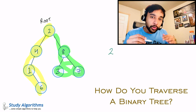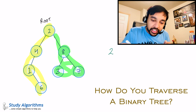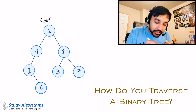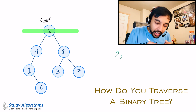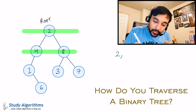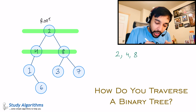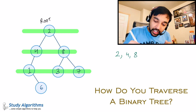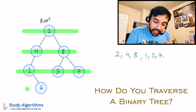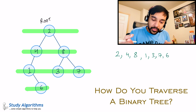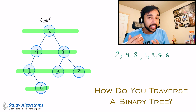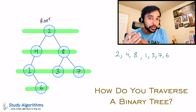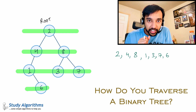You could say that you can go level by level when traversing a binary tree. For example, you can first look at level one and get 2 on the screen. Then look at the next level and get 4 and 8. Then the third level gives you 1, 3, 7, and the last level gives you 6. This technique is known as level order traversal and it comes in handy, but we will discuss it in the future. First, let us focus on in-order traversal.